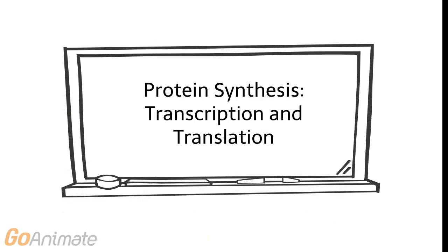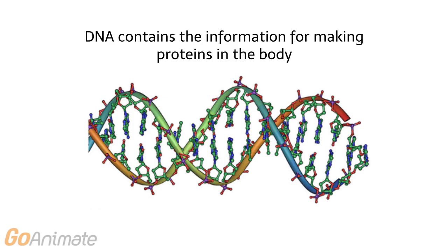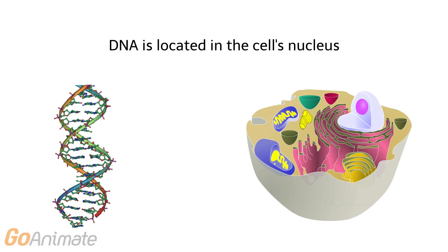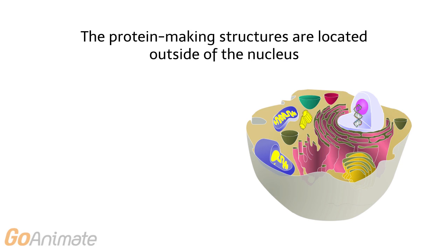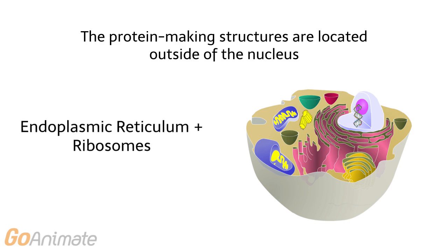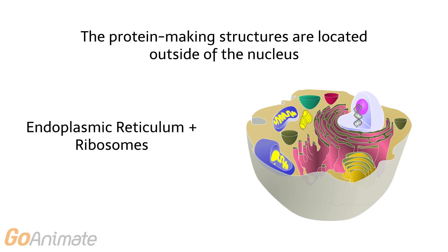Let's learn about transcription and translation. DNA contains the information for making all the proteins in the body. DNA is located in the cell's nucleus. The protein-making structures are located outside of the nucleus. These include the rough endoplasmic reticulum and ribosomes.